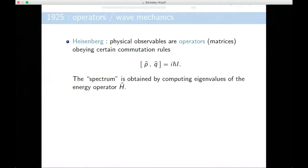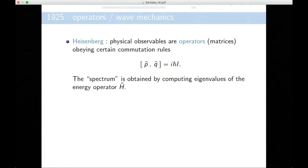Heisenberg decided to just postulate some new physical rules. One of the first principles is that the physical observables should be represented by operators — matrices or operators. And matrices, as you know, don't commute; there are certain commutation relations. He manages to explain the quantum effects by this non-commutativity of operators. In Heisenberg mechanics, if you want to compute the spectrum of a system, you should be able to build the operator describing the energy, and then compute the eigenvalues of this operator. It is here that the notion of eigenvalues and spectrum merge in the history of physics and mathematics.